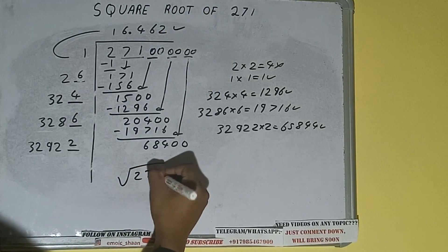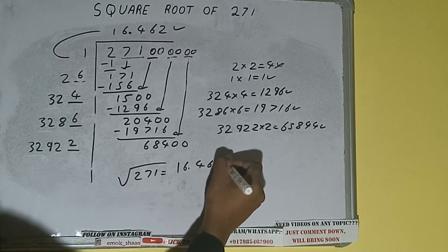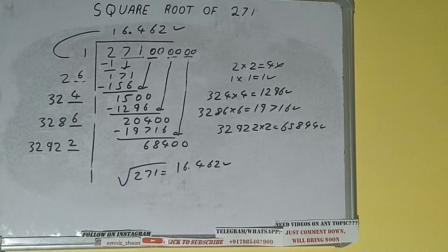So square root of 271 will be 16.462, that will be the answer. So this is all about square root of 271. If you found the video helpful, please do hit the like button, do consider subscribing, and thanks for watching.